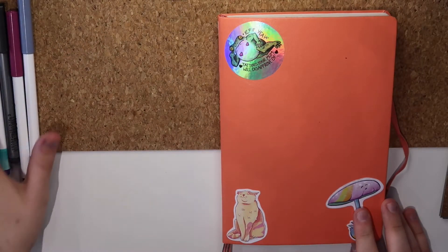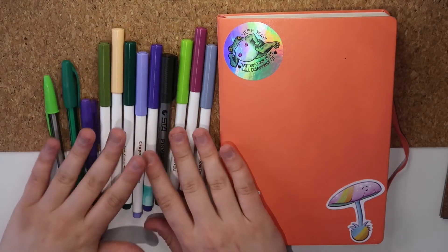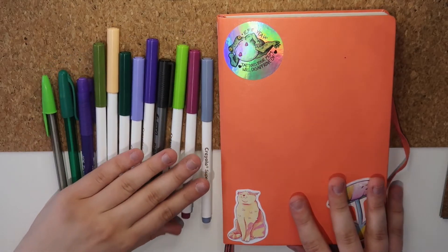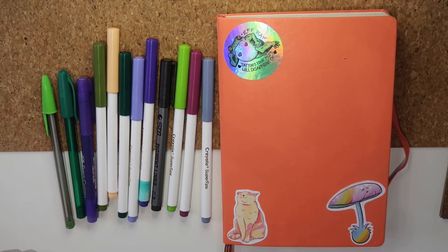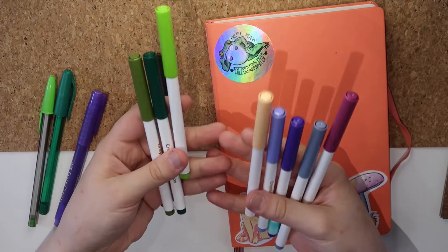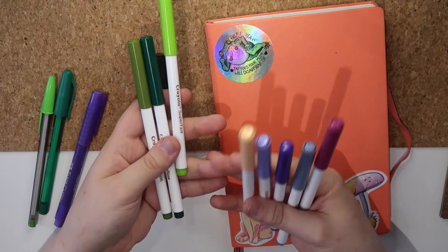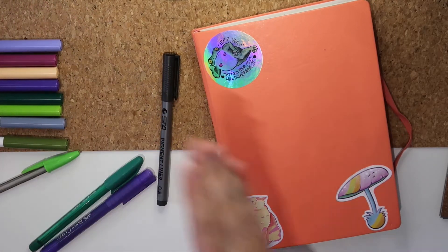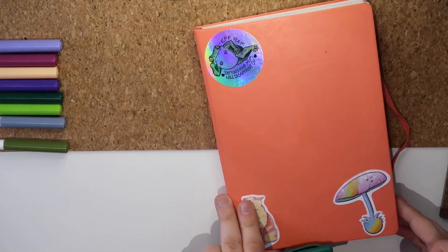Hello and welcome to my June bullet journal setup. Here are all the things I'm going to be using in this video. The main thing I'm going to be using are Crayola Super Tips, both the greens and the purples. The reason for this is that this month's theme is going to be lavender.